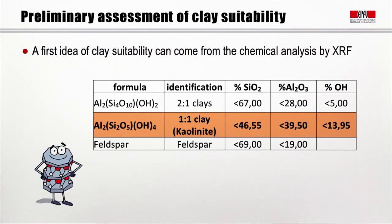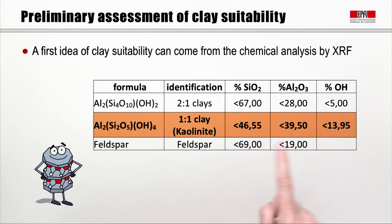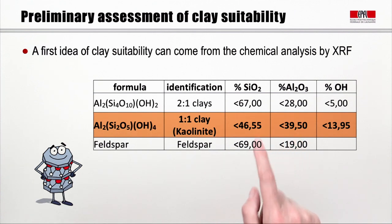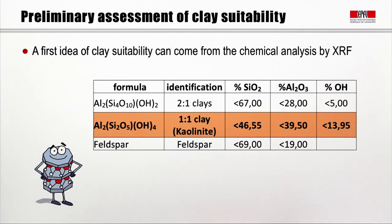As a first step, you can make a rough estimate of how much kaolinite you may have in your clay by making an X-ray fluorescence analysis, which is typically a very simple test. Because of the different ratio between silica and alumina in the 2-to-1 clays versus the 1-to-1 clays, the balance is very different — in the 1-to-1 clays we have much more alumina and much less silica. This can be a first indicator enabling you to choose the right clay type. However, chemical composition alone is difficult to turn into a quantitative figure because other minerals present may confuse the analysis.